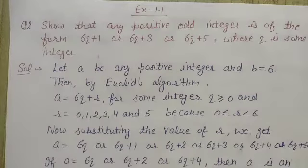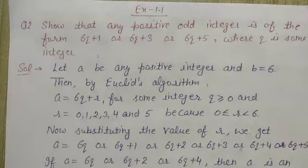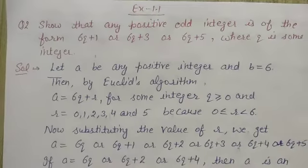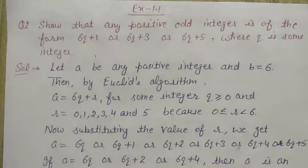Hello students, in this video we are going to start Exercise 1.1 from question number 2. The question is: show that any positive odd integer is of the form 6q+1 or 6q+3 or 6q+5, where q is some integer.